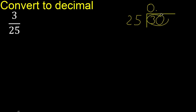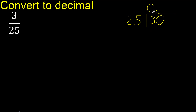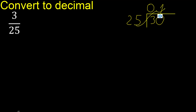Write the decimal point only once. 30 is not less than 25. So with 30: 25 multiplied by what number is nearest to 30? 25 times 2 is 50 — that's excessive. 25 times 1 is 25, which is the nearest number. Subtract: 30 minus 25 is 5. There is no number that goes further down, so complete with 0.